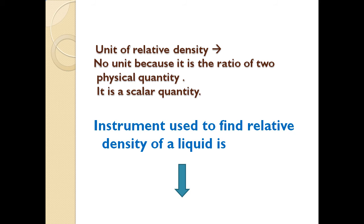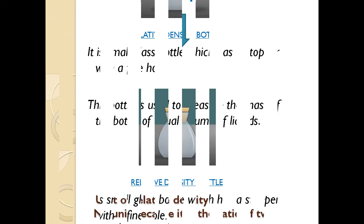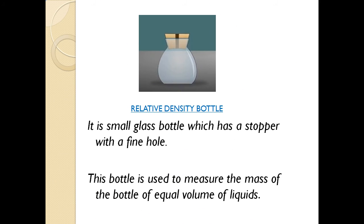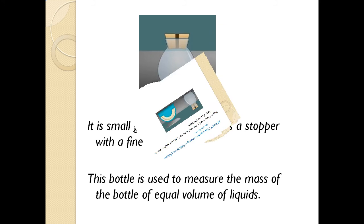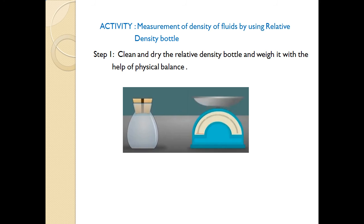In the next slide I am going to show you the instrument used to find relative density. Here is the diagram of a relative density bottle. It is a small glass bottle which has a stopper with a fine hole. This bottle is used to measure the mass of equal volumes of liquids. With the help of this, I am going to explain the measurement of density of fluids using the relative density bottle.